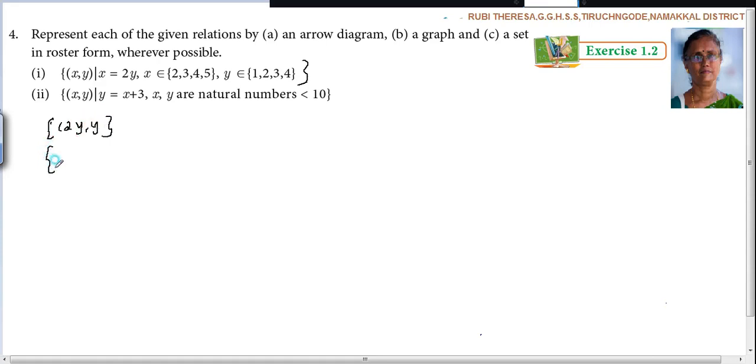In the place of Y, you are going to substitute these values. 2 into 1, comma 1. Next, 2 into 2, comma 2. Next, 2 into 3, comma 3. Next, 2 into 4, comma 4. So what will you get? 2, comma 1, 4, comma 2, 6, comma 3, 8, comma 4.